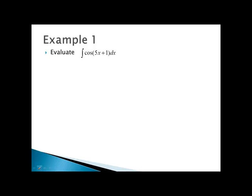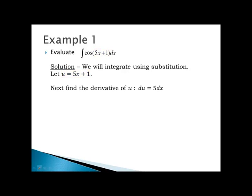Example 1: Evaluate the integral of cosine evaluated at 5x plus 1 with respect to x, using substitution. Notice that the integrand is composite — the outside function is the cosine function and the inside function is 5x plus 1 — so I'll let u be the inside function, 5x plus 1. Then I find the derivative of u: if u is 5x plus 1, then du is equal to 5 times dx.